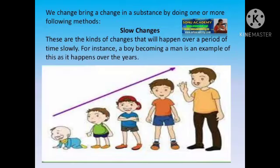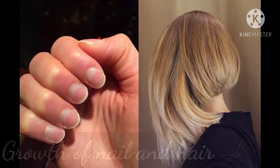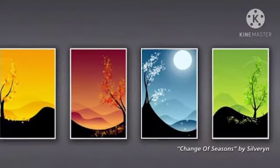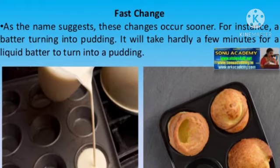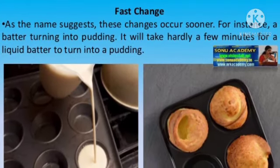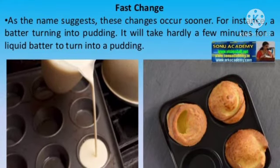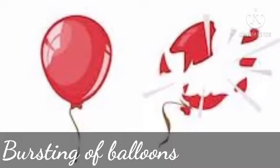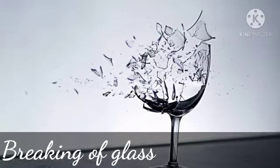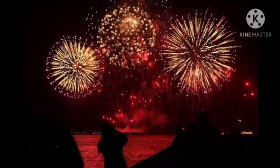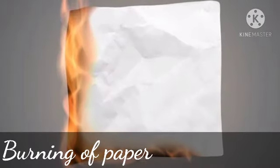Slow changes: changes which take place over a long period of time — days, months, or years — are known as slow changes. Examples: growth of nails and hair, change of season, germination of a seed. Fast changes: changes which take place within a short period of time, like seconds or minutes, are known as fast changes. Examples: bursting of a balloon, breaking of glass, bursting of firecrackers, burning of paper, etc.